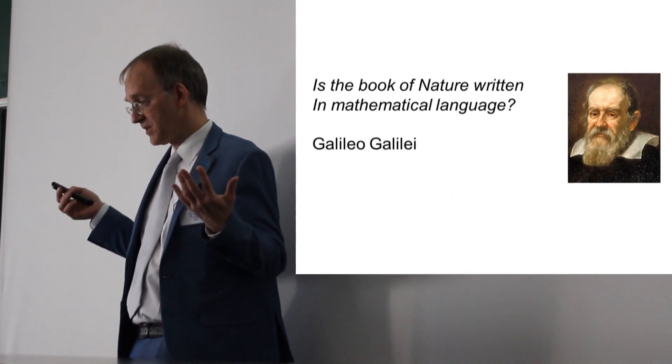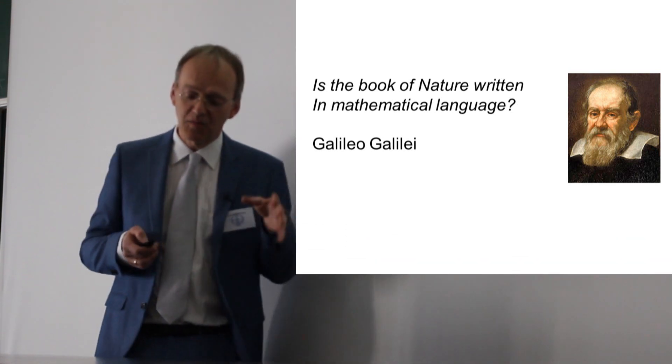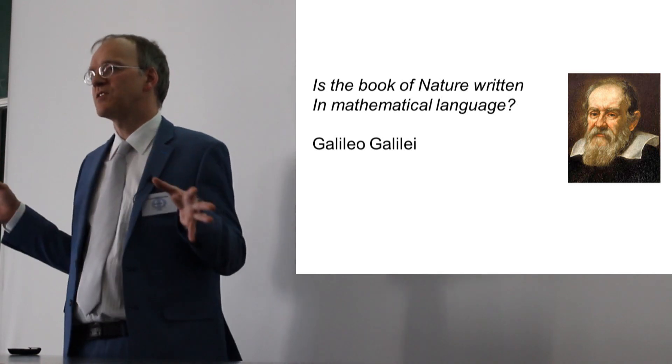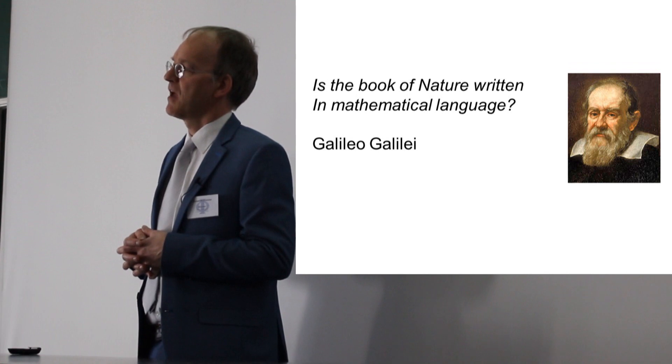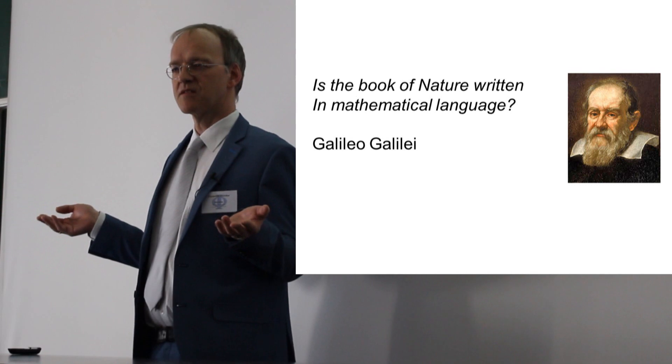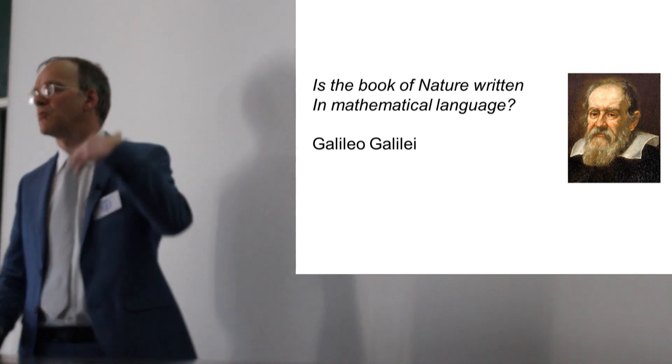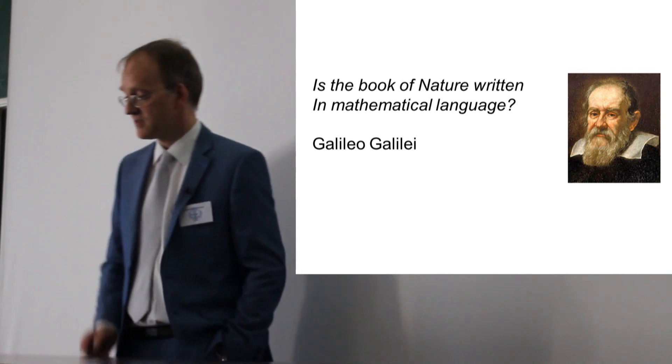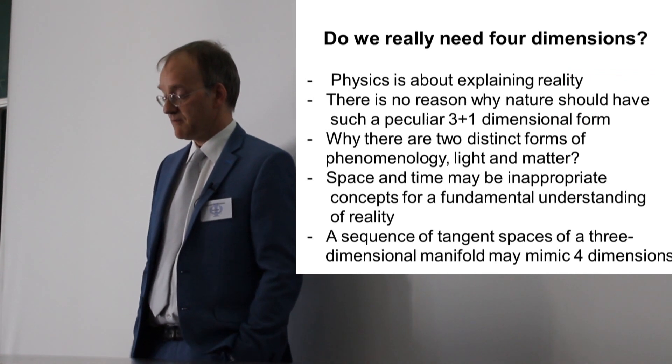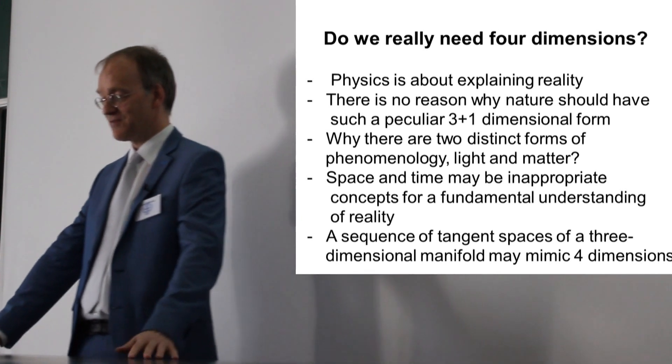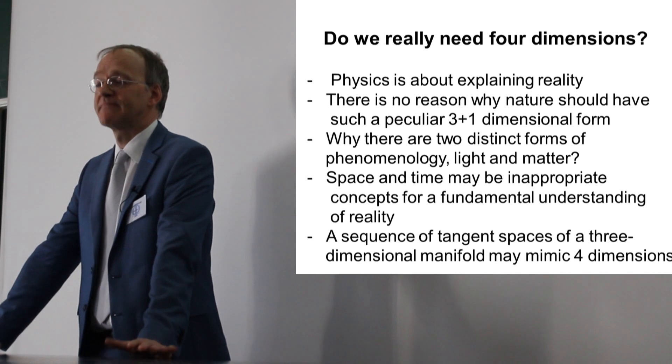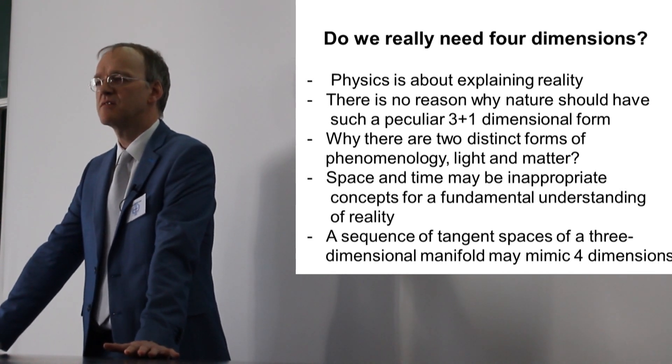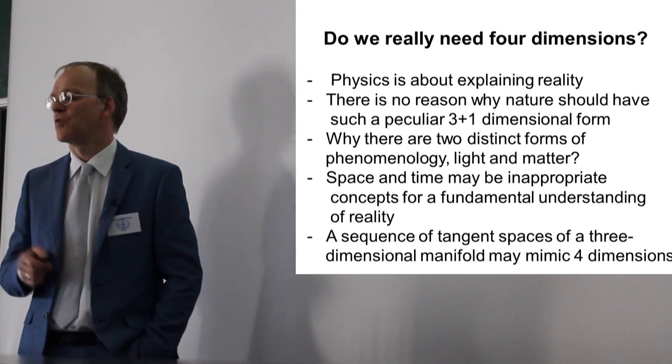If you want to do physics, we try to find explanation. Is the book of nature written in mathematical language? I used to mock string theory, but you might be surprised that I advocate here we should think about: imagine a very intelligent extraterrestrial civilization doing physics. Is there any reason why they should use fundamental constants? Couldn't there be a possibility that you describe all reality with pure math? I think we should think about that. There are a lot of questions one should wonder about. Physics is about explaining reality. There is no reason why nature should have such a peculiar three plus one dimensional form. Can you name one? Why are there two distinct forms of phenomenology, light and matter? I think this is strange.